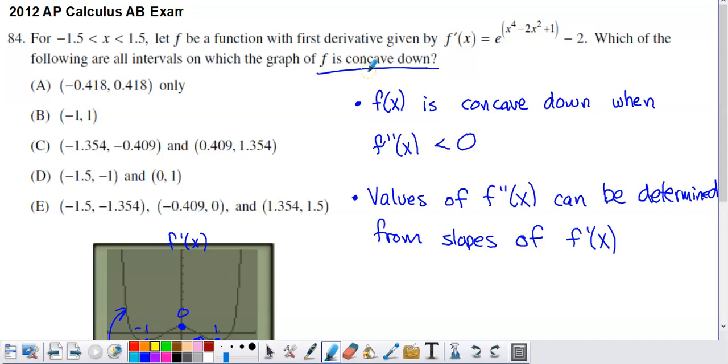On the AP exam, you're most likely going to be pressed for time, and if you can save time, you might as well do so. Here's a place where you can save some time. I know that if f prime is decreasing, that tells me the derivative of f prime is negative. The derivative of f prime is f double prime.